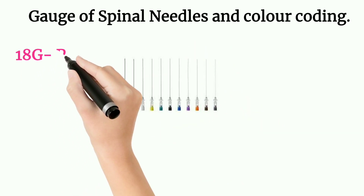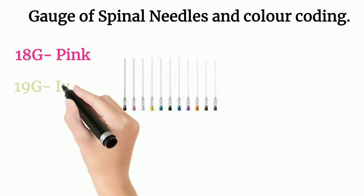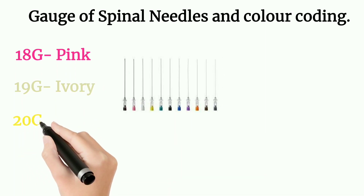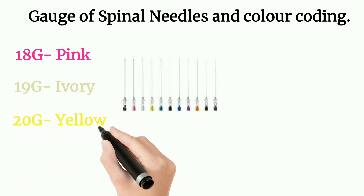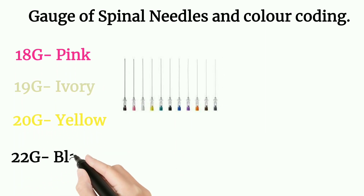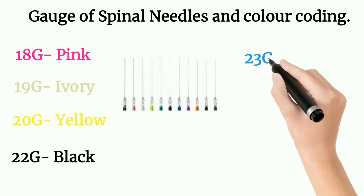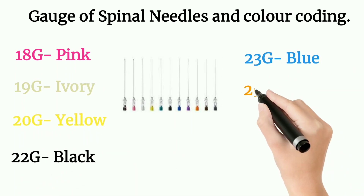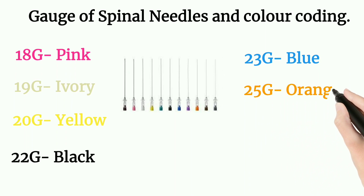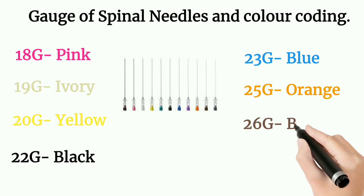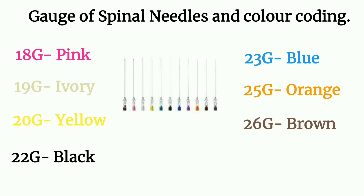Spinal needle gauge and color coding: 18 gauge — pink; 19 gauge — ivory; 20 gauge — yellow; 22 gauge — black; 23 gauge — blue; 25 gauge — orange; 26 gauge — brown.